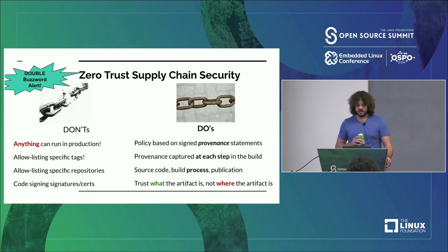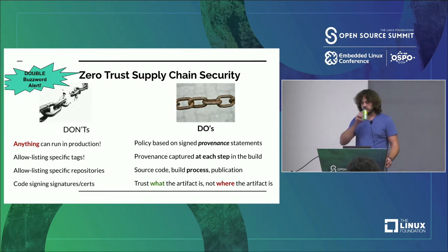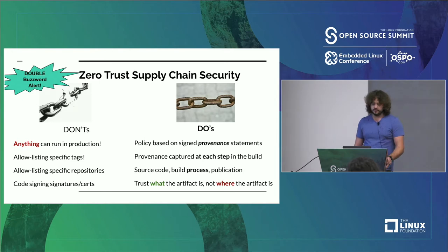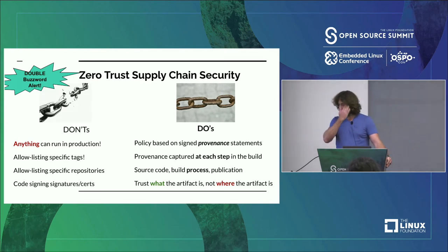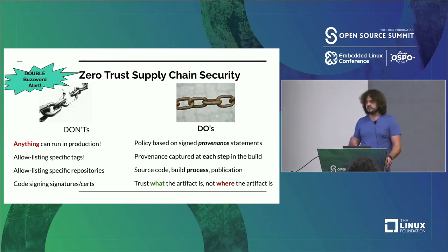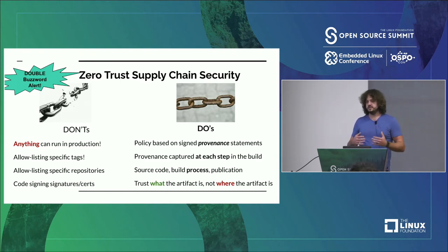Here are some top-level principles on how we can get to zero trust supply chain security — some don'ts and some dos. The first don't is obviously nothing, which a lot of people are probably doing today — just allowing anything to run in a production environment with no idea where it came from. Allowlisting specific tags is the next step up. If you push all your images to a single location, you can at least restrict things to that. It's way better than doing nothing, but anything pushed there is now inside your trust circle — still not really zero trust.